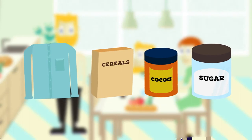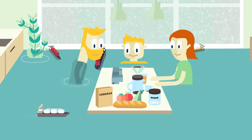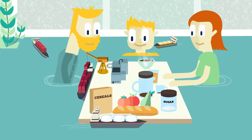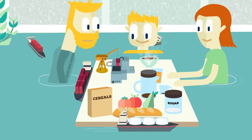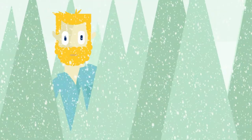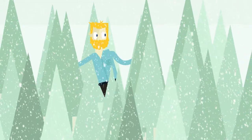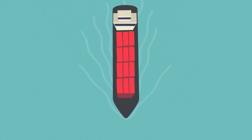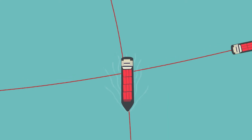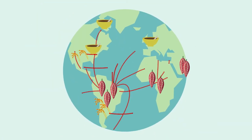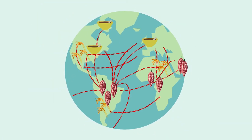Yes, most of the raw materials that are in the goods we consume are imported. Sugar, cereals, cocoa. Have you ever seen a cocoa tree grow in Switzerland? This is where the international commodities trade comes into play. Its role is to orchestrate the worldwide flow of goods from places of production to places of consumption.